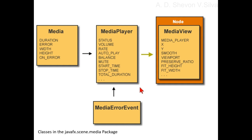The MediaPlayer class provides all the attributes and functions needed to control media playback. You can either set autoplay mode, call the play function directly, or explicitly specify the number of times that the media should play. The volume variable and the balance variable can be used to adjust the volume level.